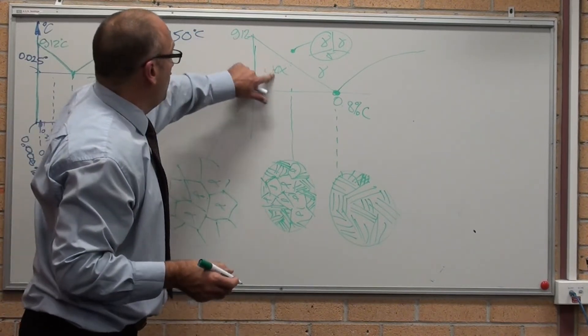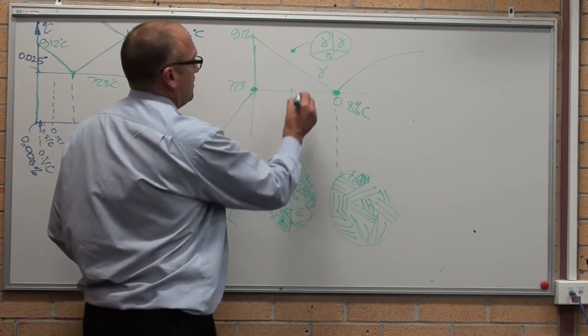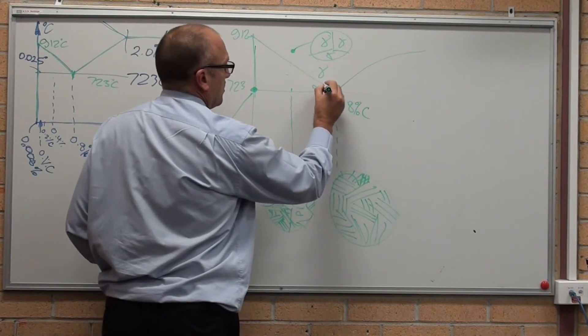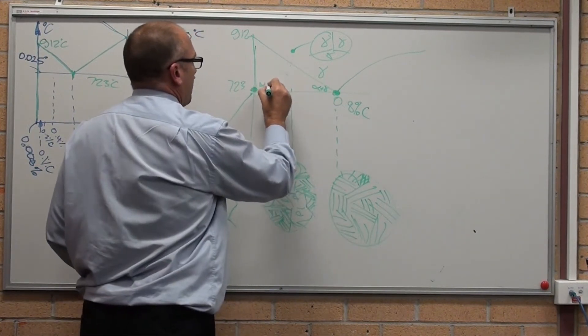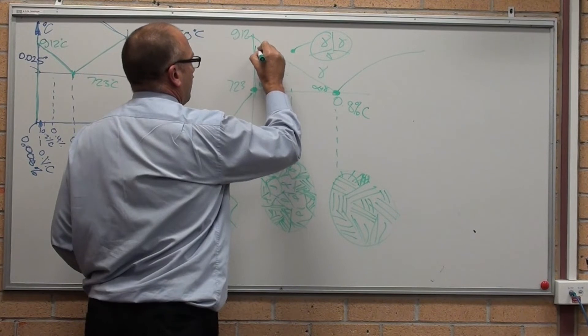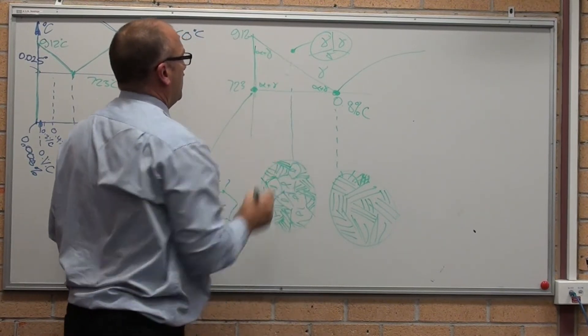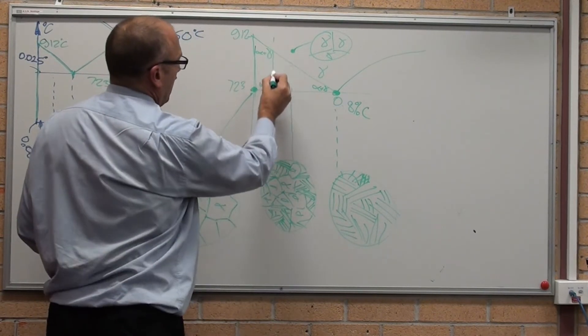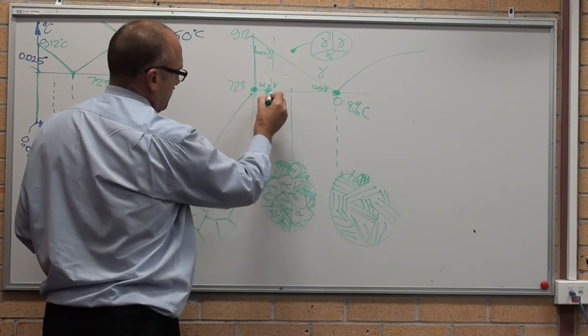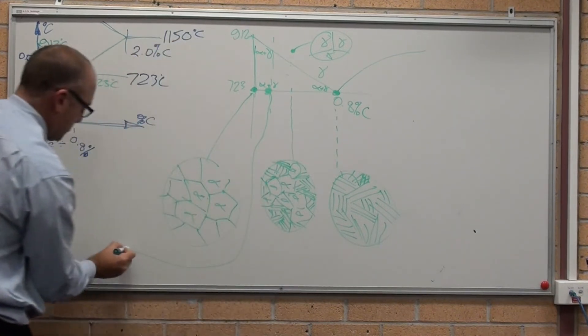What about if we go - I'll just push this over here. Ferrite plus austenite, ferrite plus austenite. If I'm a quarter of the way, 0.2%, which is a mild steel, let's put this one over here.